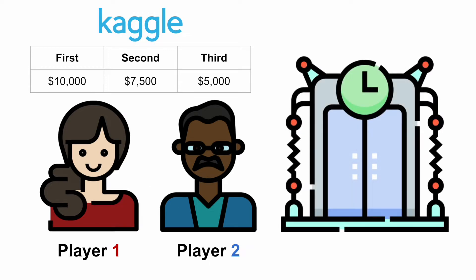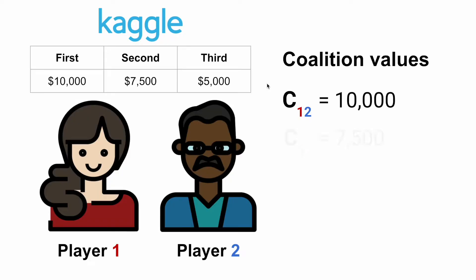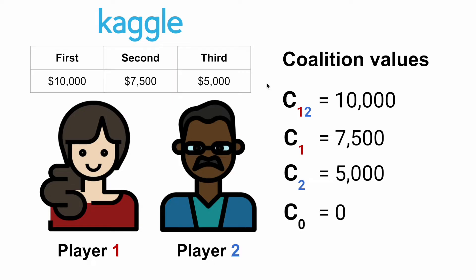Conveniently, your friend owns a time machine. You both go back in time and redo the Kaggle contest alone. This time you end up coming second and making seven thousand five hundred dollars, while your friend only comes third and makes five thousand dollars. Also, if none of you played, you wouldn't make any prize money. These are the coalition values. Looking at these, it's clear that you deserve more of the prize money — you did better by yourself, or in other words, you contributed more to the coalition of two players.